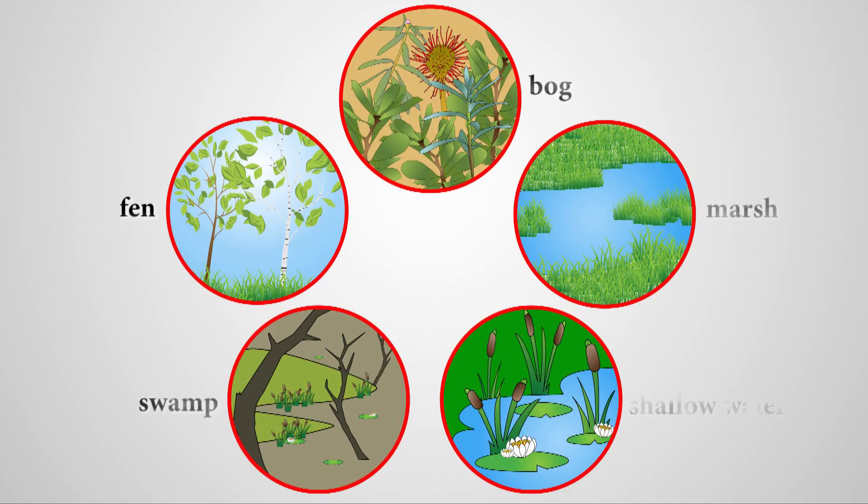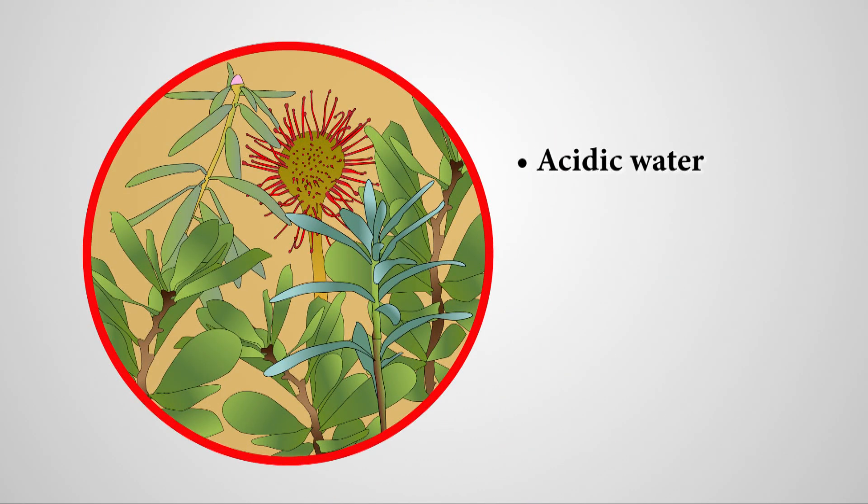So what exactly is a bog anyway? A bog is one of five types of wetland, where the water is acidic and low in nutrients.